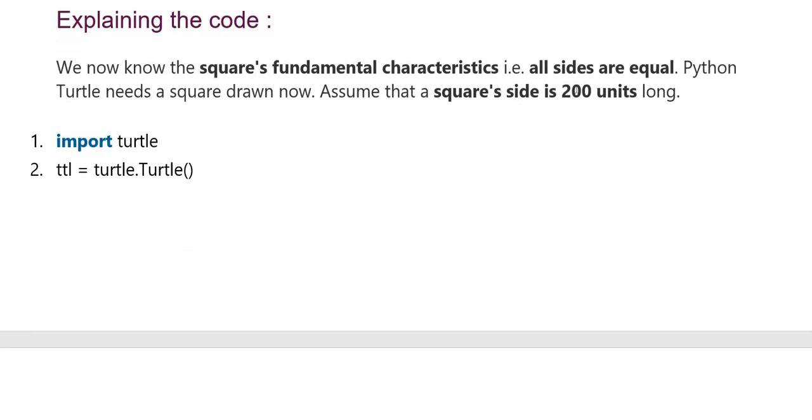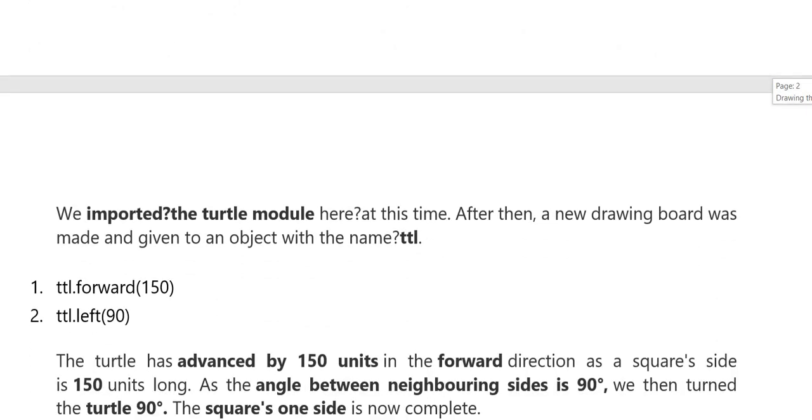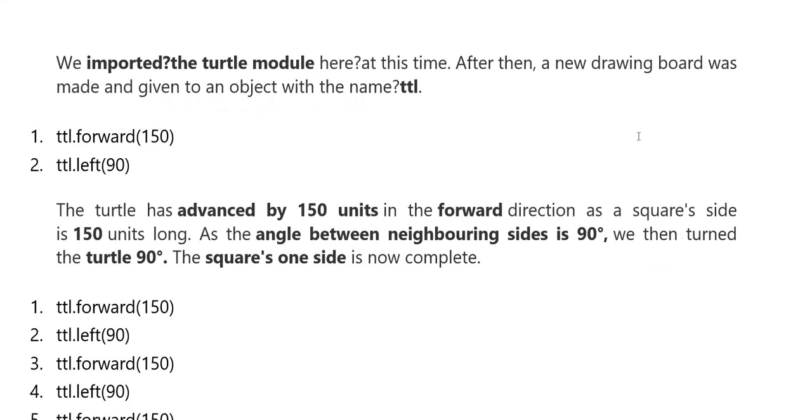Square's fundamental characteristics: all sides are equal. In Python, which we have a turtle, draw a square. Assume the square side is 200 pixels units long. Import turtle, which we represent, is the same procedure. Import module. A new drawing board is made with an object with the name. Forward, left.